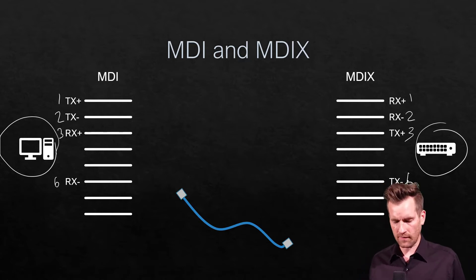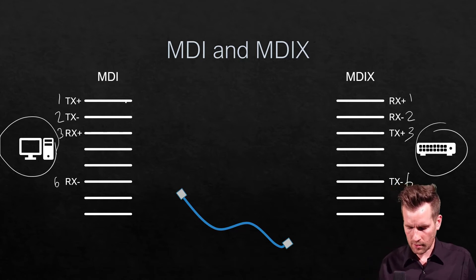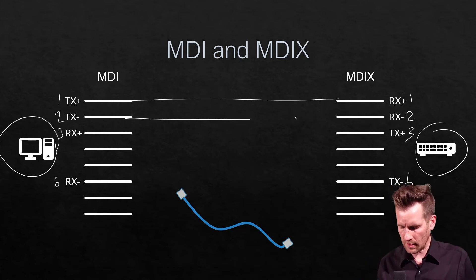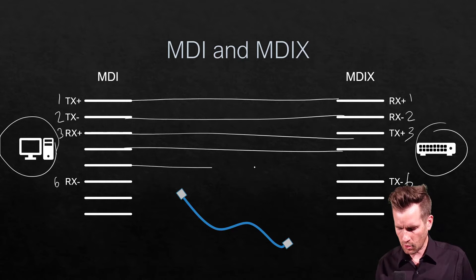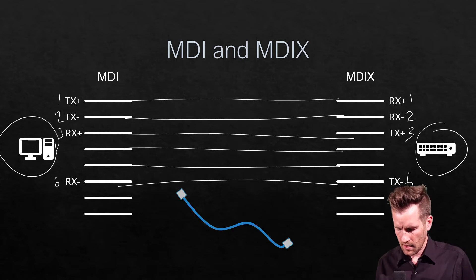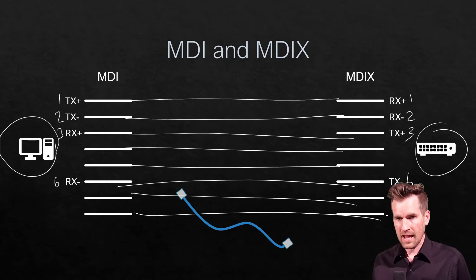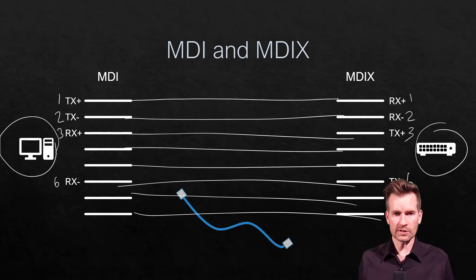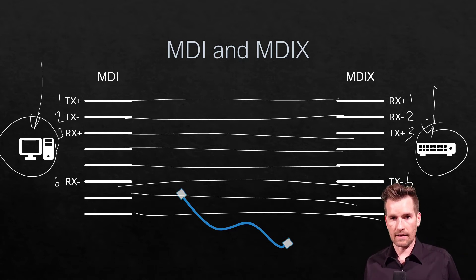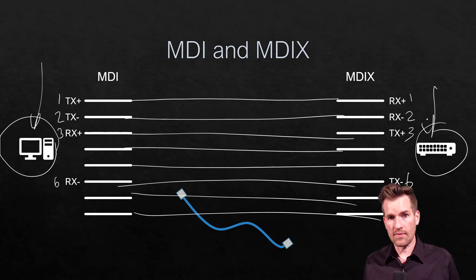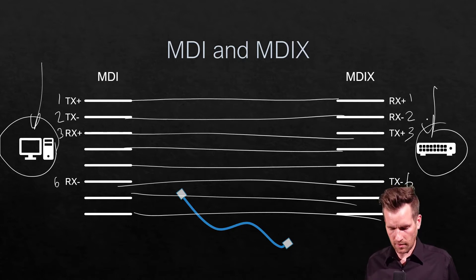When connecting these two devices with a straight-through cable, everything lines up correctly, so you don't have any problems. Most equipment that's meant to connect together — such as switches connecting to computers — works fine with just a straight-through cable.